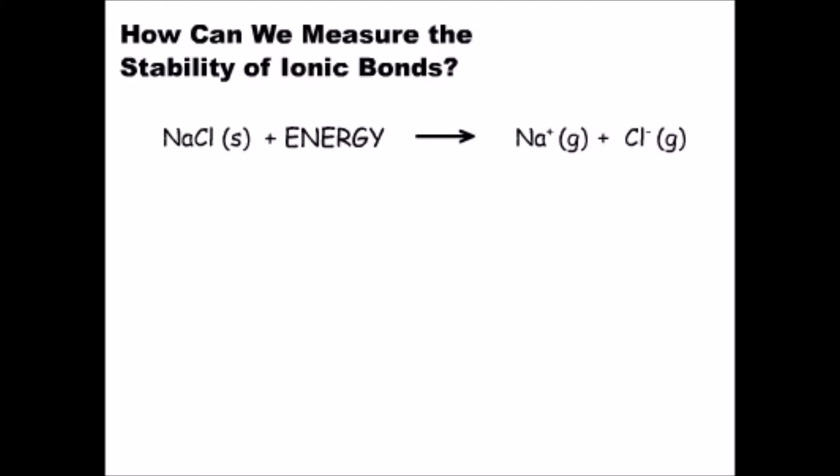Ionic compounds are made up of a metal, M, and a nonmetal, X. When enough energy is added, the compound breaks up into metal cations and nonmetal anions.